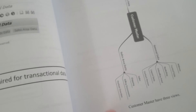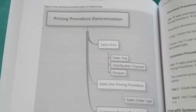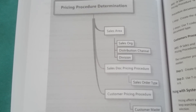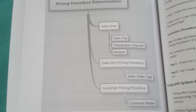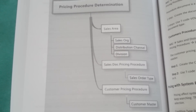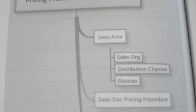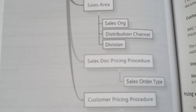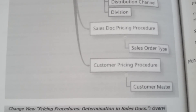Now let's look at how the pricing procedure gets determined. In this diagram, it is based on sales area, sales document pricing procedure, and customer pricing procedure. Sales area is made up of sales organization, distribution channel, and division. The sales document pricing procedure comes from the sales order type, and the customer pricing procedure comes from the customer master.